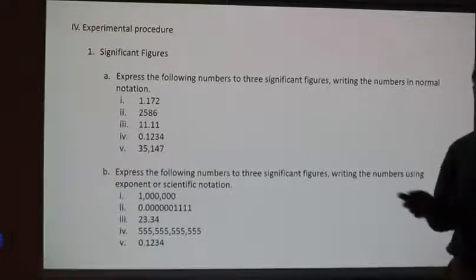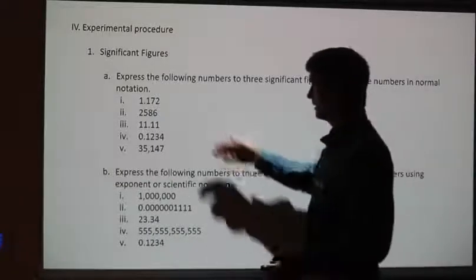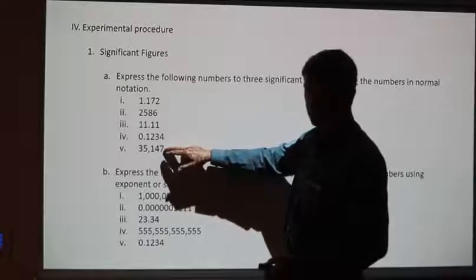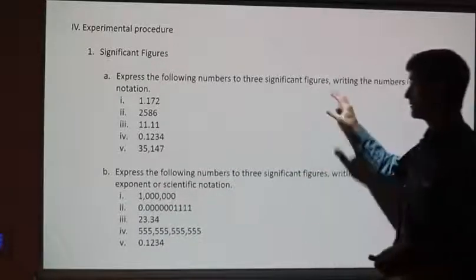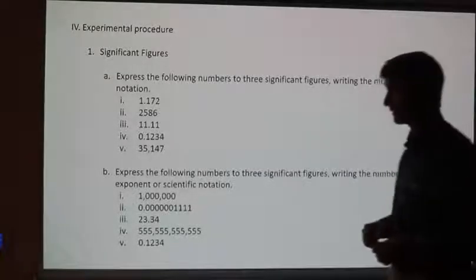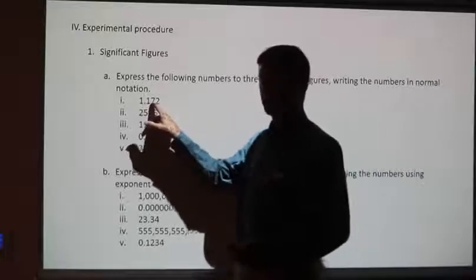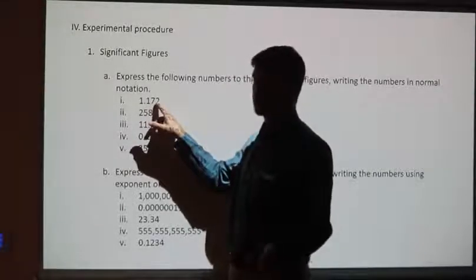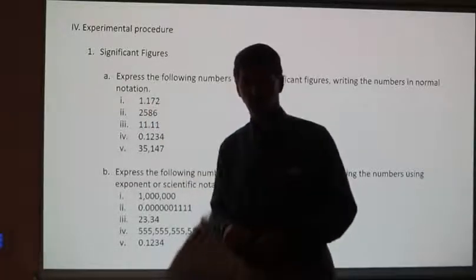This is really simple and straightforward — Part A and Part B. You have four significant figures and five significant figures in each of these numbers. Your job is to change that to three significant figures. For instance, 1.17 — I'm at the third significant figure. I'm going to get rid of the 2; it's less than 5, so I don't round up the figure next to it.